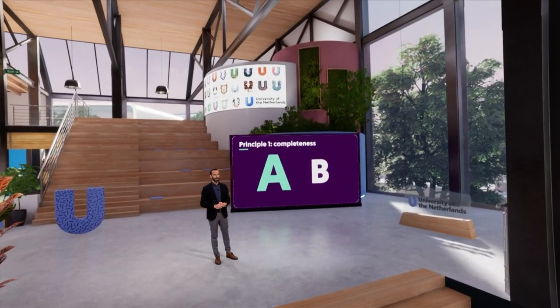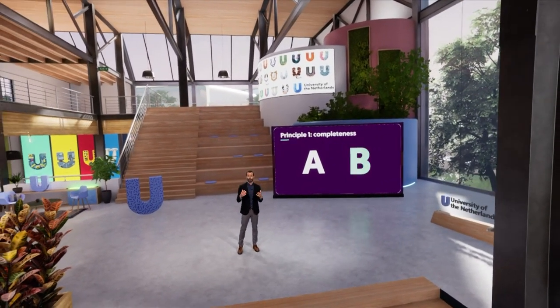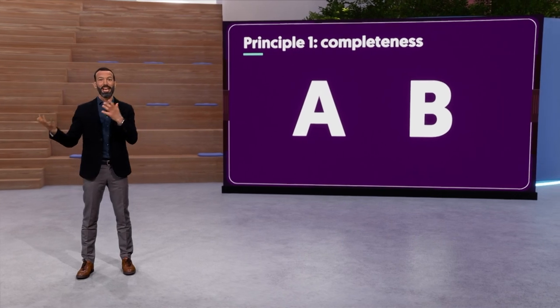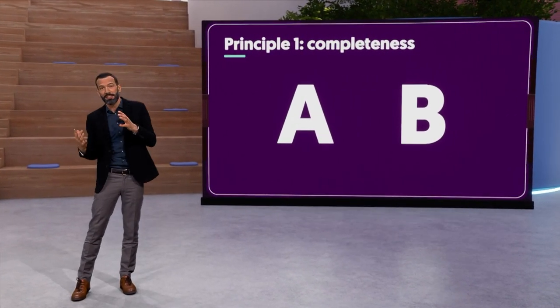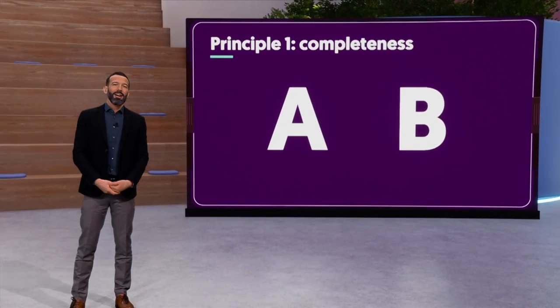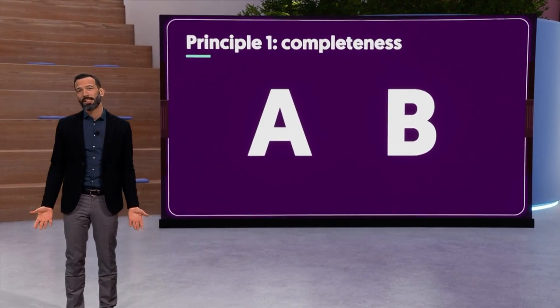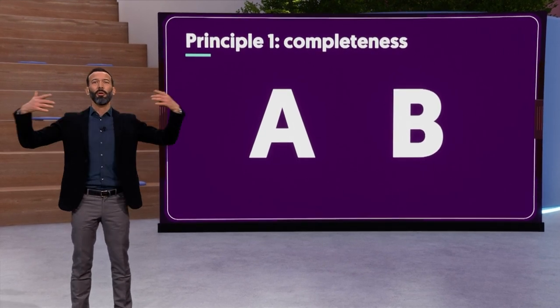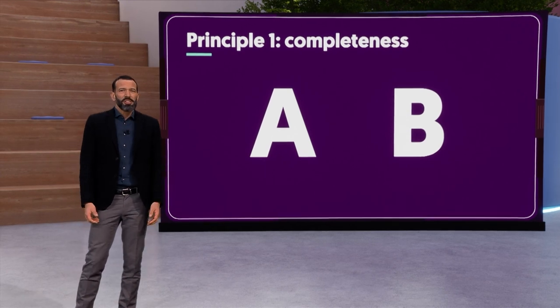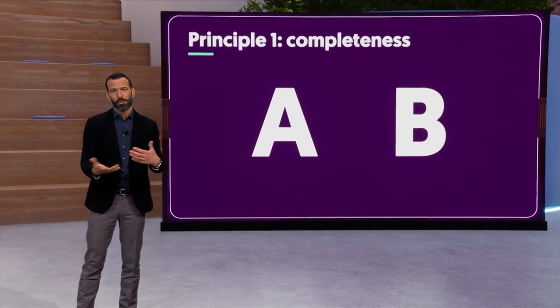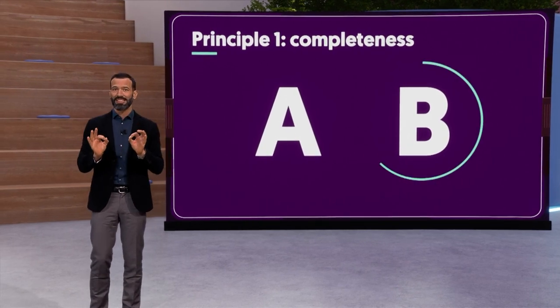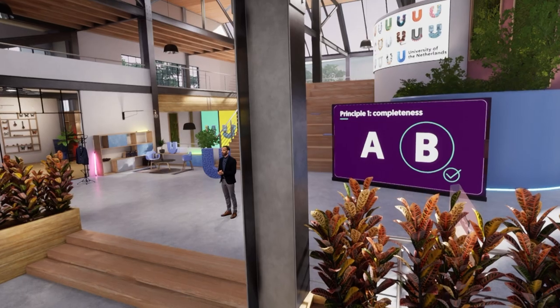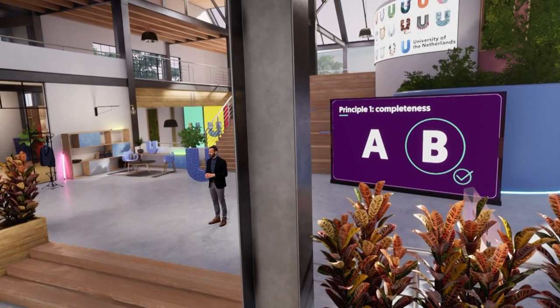Which properties should a good decision process have? Here are four key principles. Principle one is called completeness. A good decision process should always tell us what to choose. For any two possible actions A and B, it should tell us whether A is better than B, or the opposite, or if they are equally good. Our way to make decisions as human beings does not always satisfy completeness — we may just stick to some default option or the status quo. But ideally, a good decision process should tell us which action is better, if any. It should be complete.